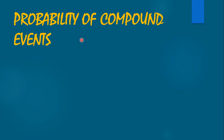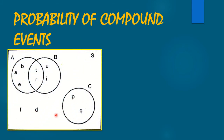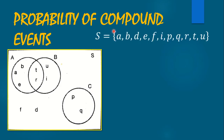For the probability of compound events, let us use the given Venn Diagram. We have event A, event B, and event C. From this given Venn Diagram, the sample space will be A, B, D, E, F, I, P, Q, R, T, U.